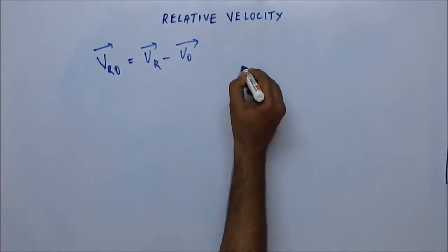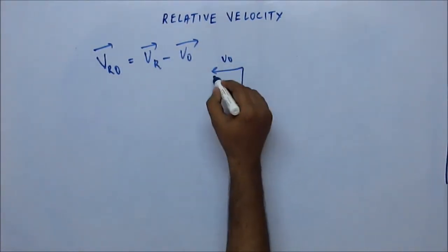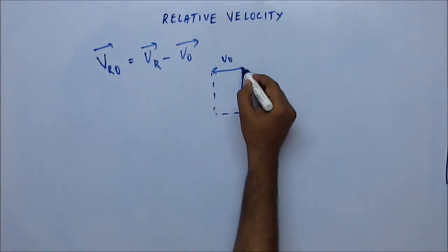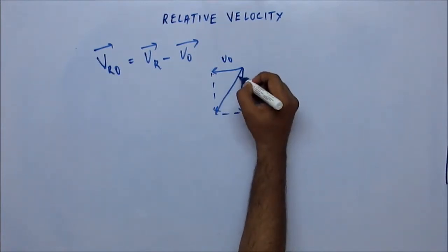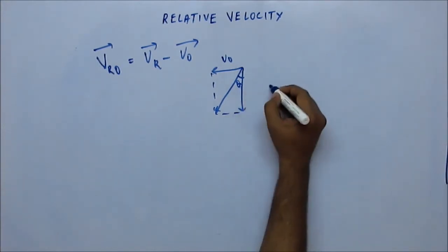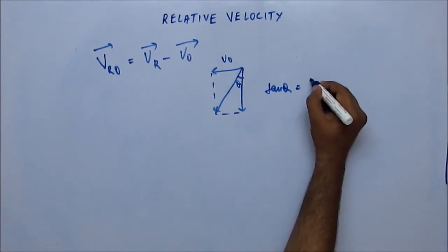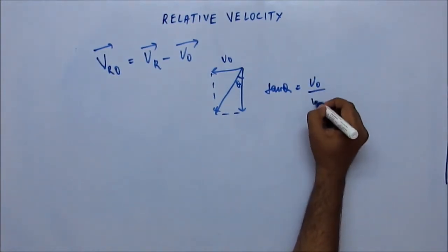If this is the velocity of rain and the observer is moving towards right, the negative of the velocity of observer minus VO would be like this. And this is the angle, this is the vertical angle theta which the rain would be making with the vertical from the point of view of the observer. So this angle theta, tan theta we can see from basic geometry is VO upon VR.